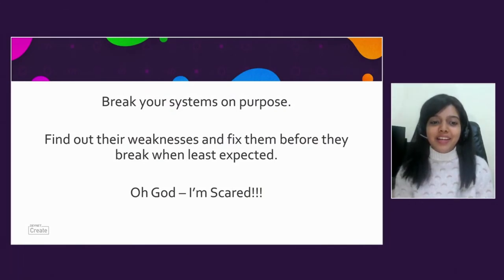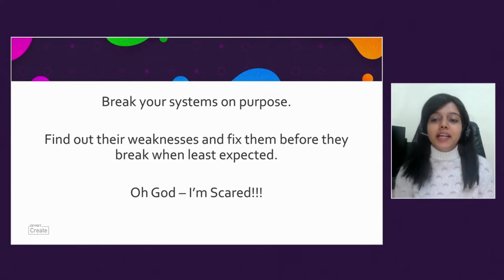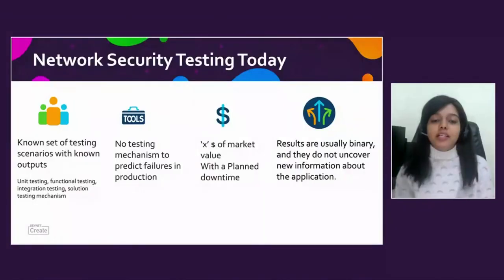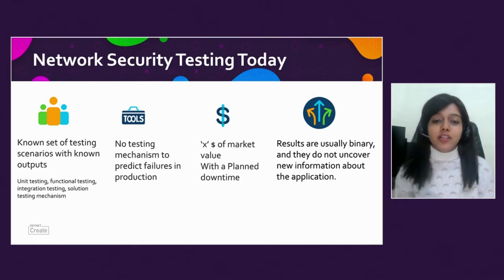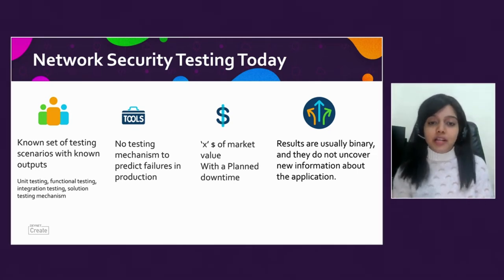You might think this is a crazy idea — injecting failures into the production system. Why would we need to break our own system? You'll get answers to this shortly. Most network testing mechanisms today are scenario-based or hypothesis-based: if you know test case A and expected output B, you create a scenario around that. But in a production network, which is a very dynamic environment, constant changes cause unexpected emergent behaviors and errors, mostly leading to network downtime. There is no testing mechanism to predict failures in the production system.